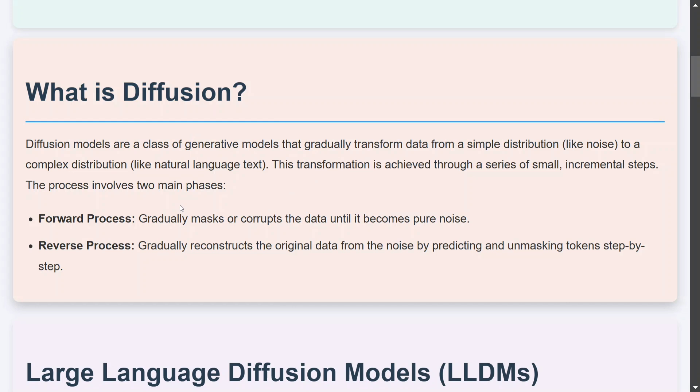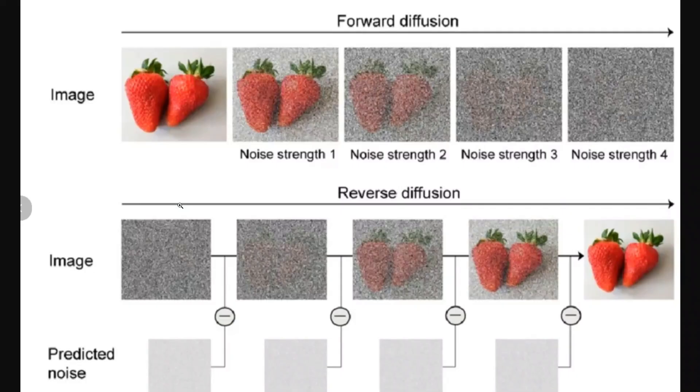Basically, there are two phases involved in diffusion. You take an input, you gradually corrupt it, and once the input is completely corrupted, then you have a reverse process to improve back to the input image.